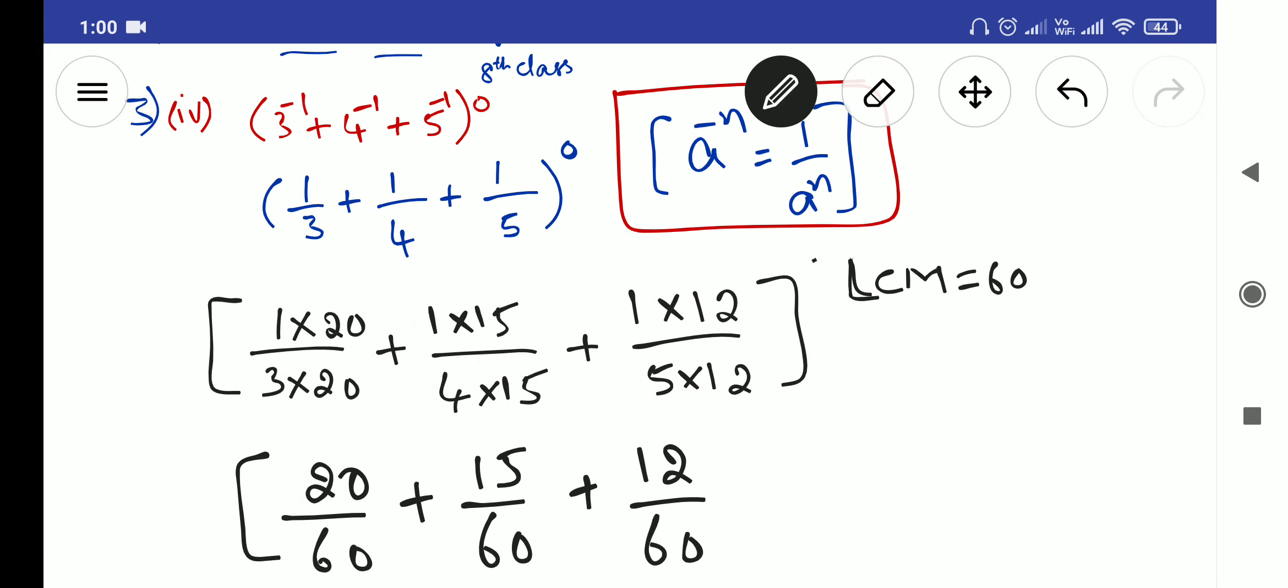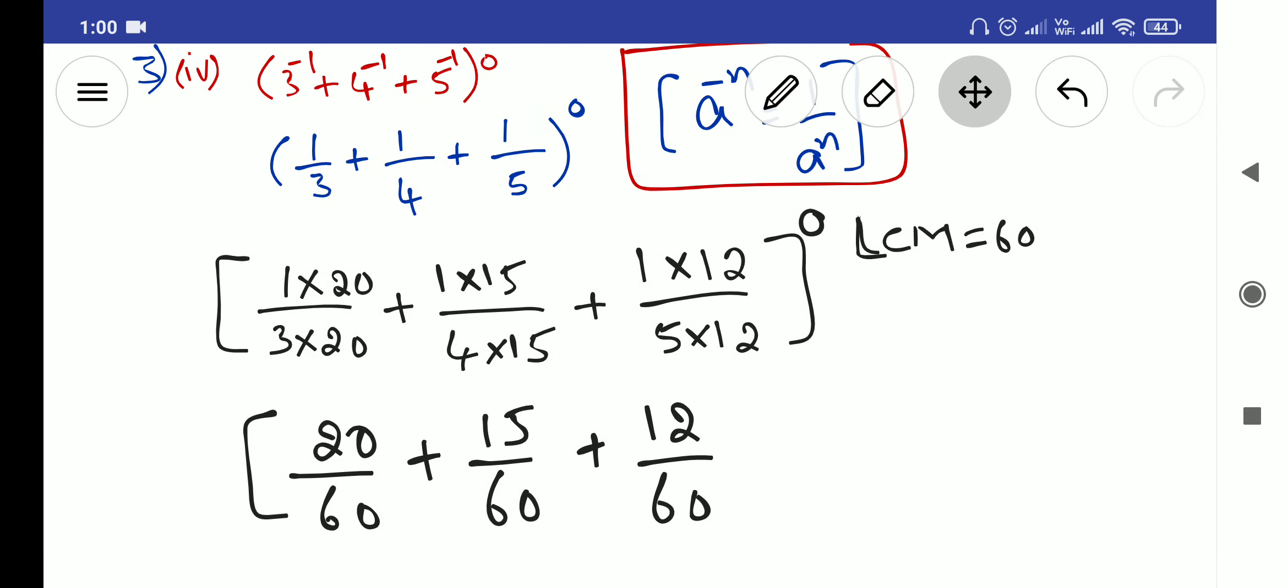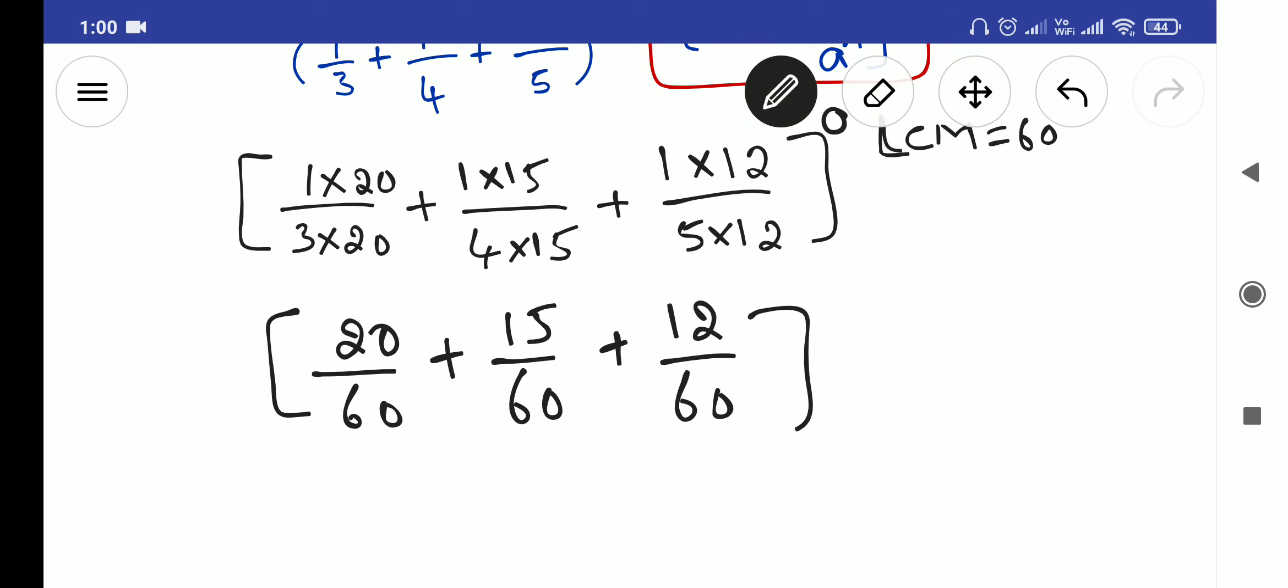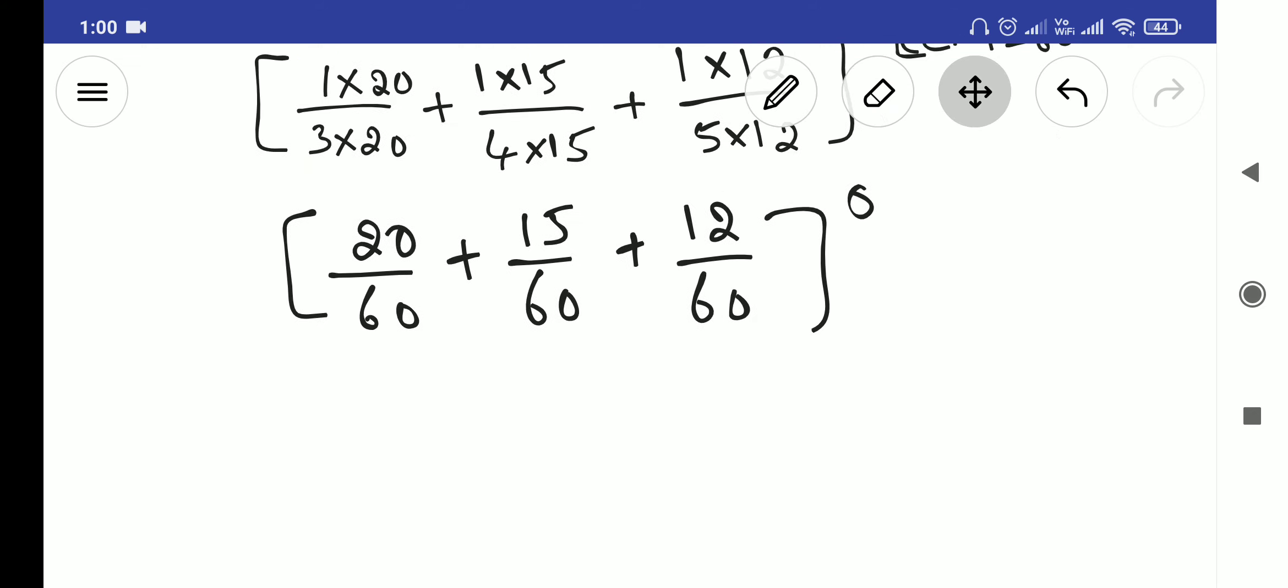In the before, I forgot to keep the 0 on the top which is very important, that is power 0 is there in our main question. So whole power 0. Now simply it's addition of this 20 plus 15 plus 12, whole divided with 60, whole power 0.